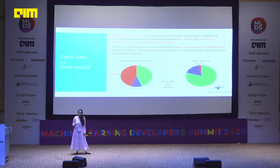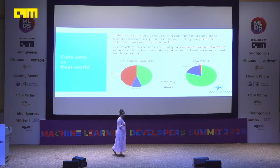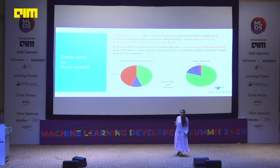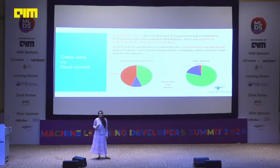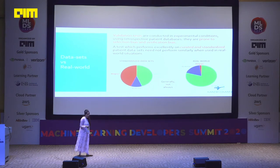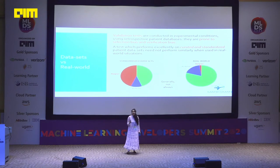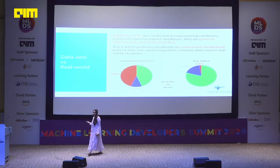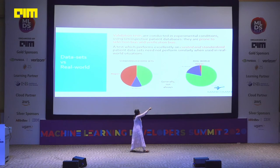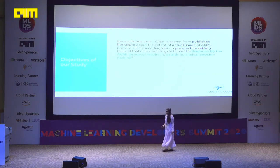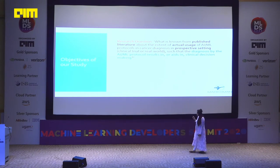Since validation tests are conducted in experimental conditions using retrospective patient databases, they are prone to selection bias. When we say retrospective data sets, that means already-tested data sets are being used, creating selection bias — no randomization in the selection of data, so the output is customized. We really need to judge the performance of AIML in a real world setting. In a standardized data set, the chances of benign versus malignant are cleanly separated, but in the real world setting this is quite varied.